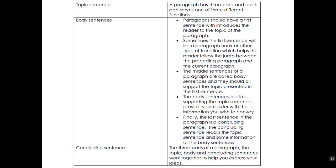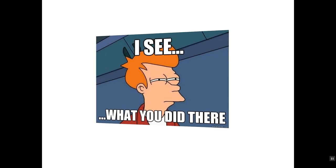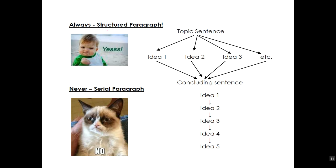Finally, the last sentence is a concluding sentence. It recalls the topic sentence and some information from the body sentences. The three parts of the paragraph — the topic, body, and concluding sentences — work together to help you express your ideas. That's the way a structured paragraph should always look. Always have a topic sentence, then several ideas that support it, and bring them all back together in the concluding sentence. Never write in a serial fashion, going from one idea to another without cohesion — that will leave your audience very confused.